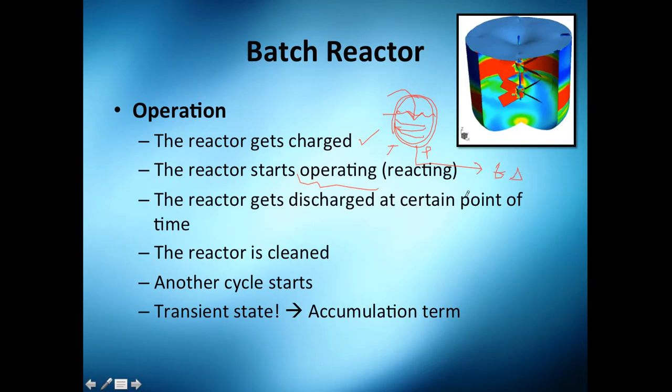You discharge the batch at a certain point of time - you give it a certain time, it's very important. And then you got this dirty reactor, you clean it, and you start the cycle again. So that was batch number one. What would you do? You will do the same thing and you will get batch number two, and you will do this until you get to the final required amount.